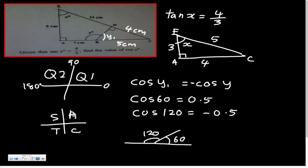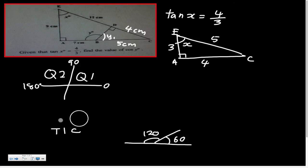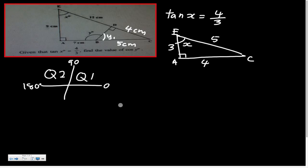Based on the ASTC rule: first quadrant all positive, second quadrant sine positive, third quadrant tangent positive, fourth quadrant cosine positive. Because angle y is already more than 90 degrees, you can't directly use it to find cos y, so you borrow the reference angle. This reference angle is what we call y1.